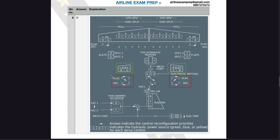Think of the flight computer as a brain and the hydraulic system as the muscle — you need both for the system to work, just like the human body. So along with ELAC-2 as the brain, you need the green hydraulic system as the muscle to work in tandem for the left elevator to function. In a normal situation, ELAC-2 works with the green hydraulic system to move the left elevator.